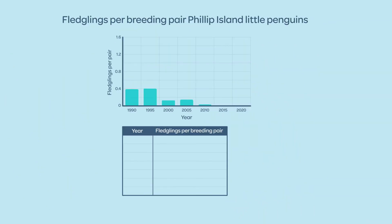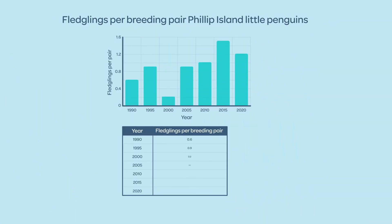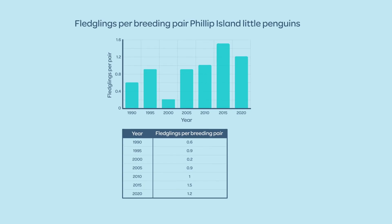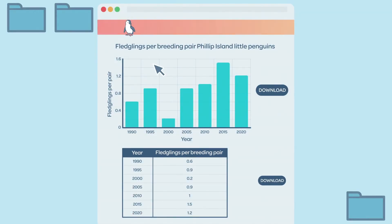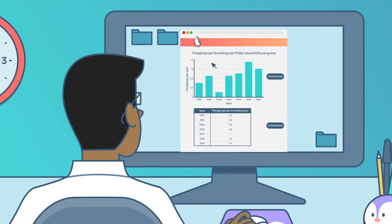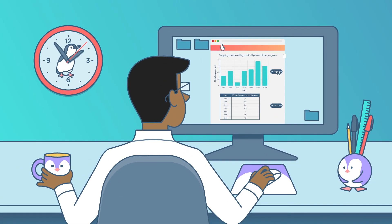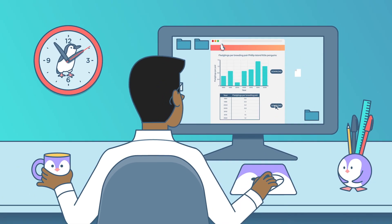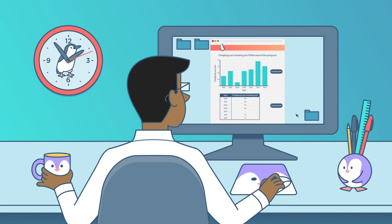The data collected by the scientists is primary data for them because they collected it. If they publish their data on a website and someone else uses it, it is secondary data to that person because they didn't collect it themselves.